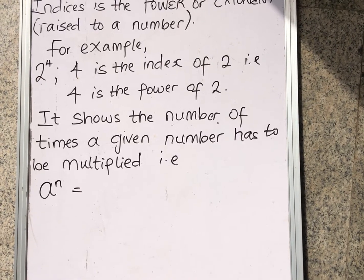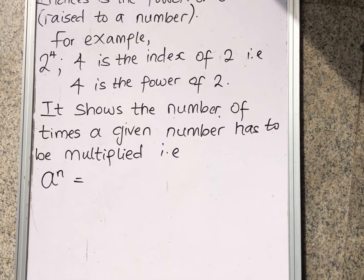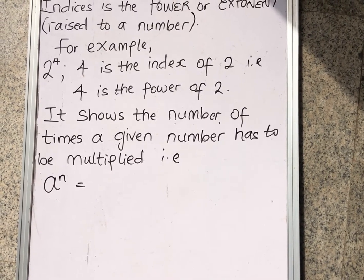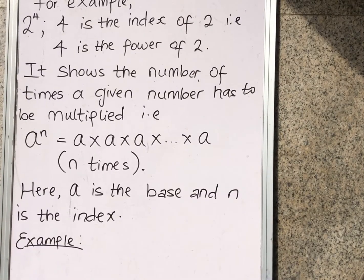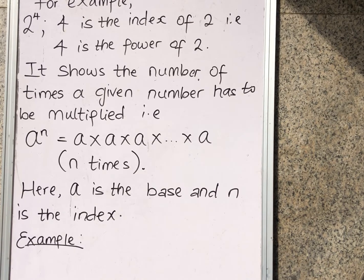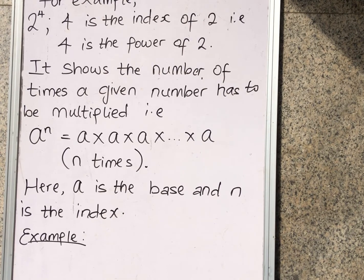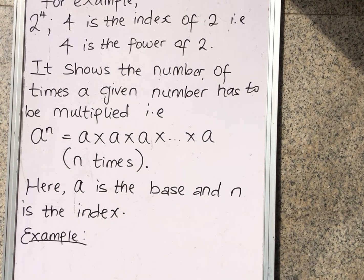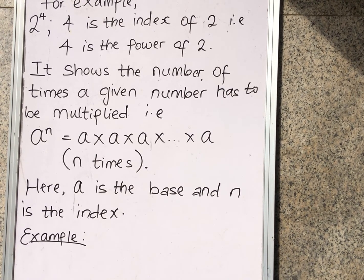It shows the number of times a given number has to be multiplied. In this case, we have a raised to the power of n. What does that mean? It means multiply a n times. And remember, we do not know what n means in this case — n could be 20, n could be 24, n could be 100. So you keep multiplying a n times. In this case, a is the base and n is the index.